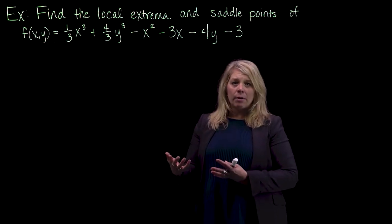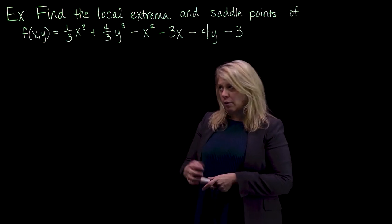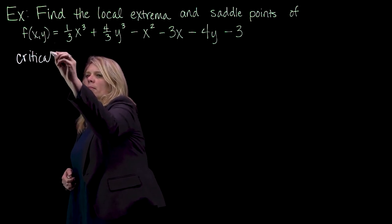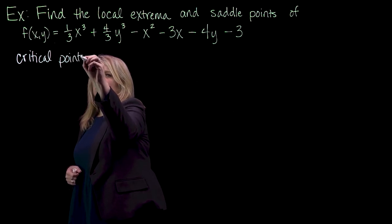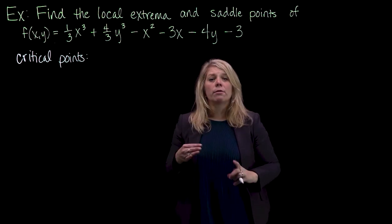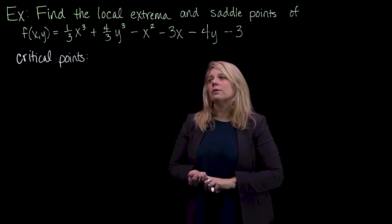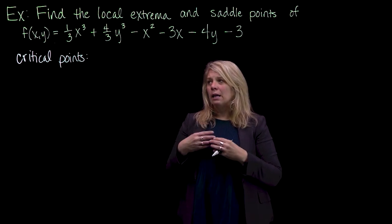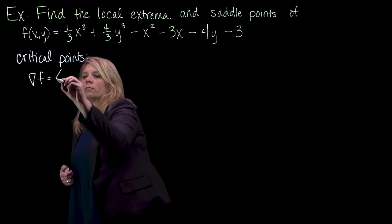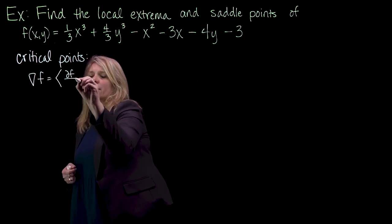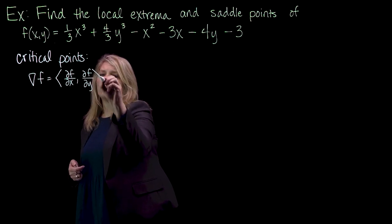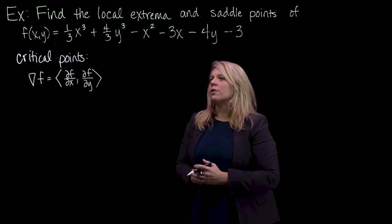The first thing we want to do, just like in Calculus 1, is find the critical points of the function. The critical points are the points where the derivatives — in this case all of the derivatives — are zero or do not exist. So we want to start by finding the gradient vector. Your gradient vector is just your partial derivatives with respect to x and y, since we have a function of two variables here.